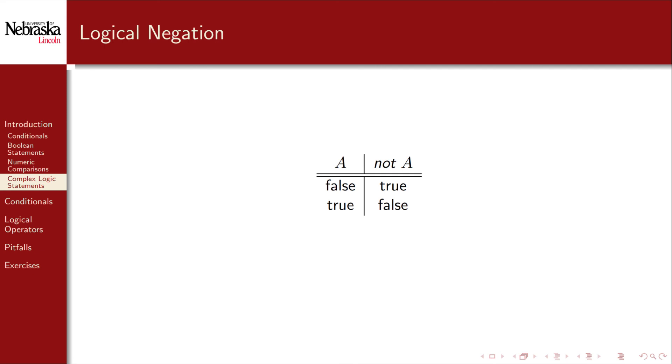Finally, a logical negation can be used to flip the truth value of a single operand. If A is false, then its negation becomes true. If A is true, then its negation becomes false. In code, we use the exclamation point to denote the logical negation.